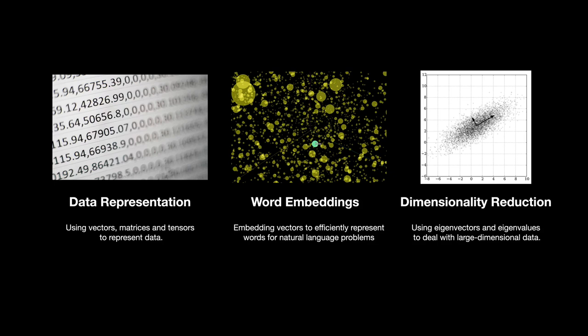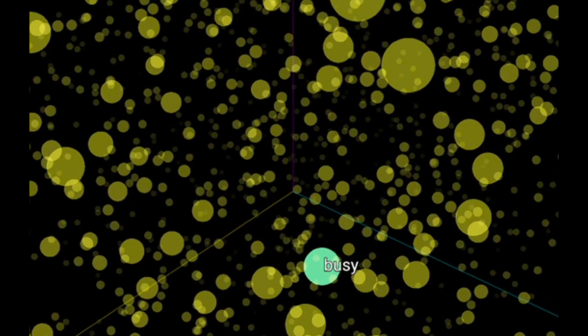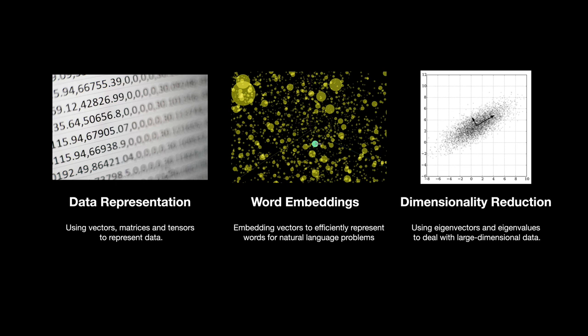The main areas enabled by linear algebra are data representation, word embeddings or vector embeddings, and dimensionality reduction. You can represent your data using vectors, matrices, and tensors. In word embeddings, it's about replacing a large dimensional vector with a smaller one. Concepts like eigenvectors allow us to reduce the number of features or dimensions of data while keeping the essence of all of them using principal component analysis, all driven by linear algebra.